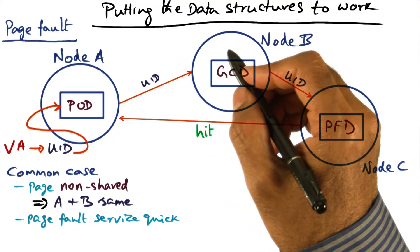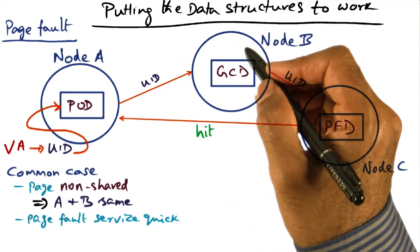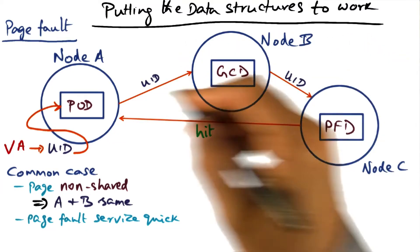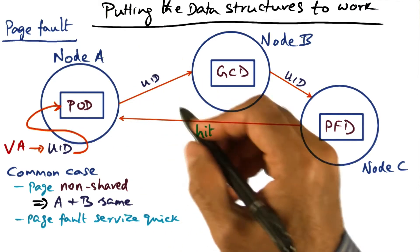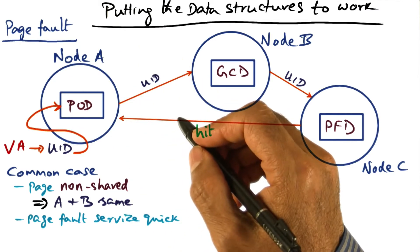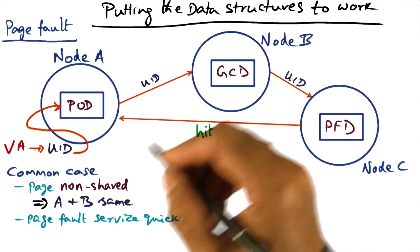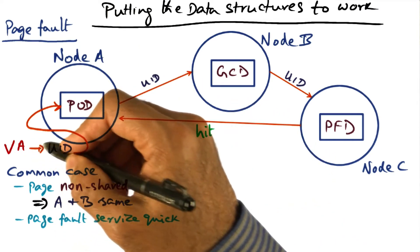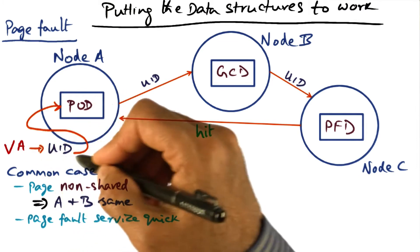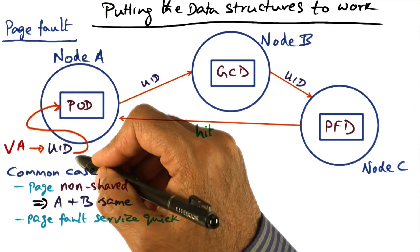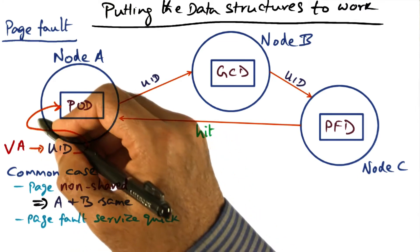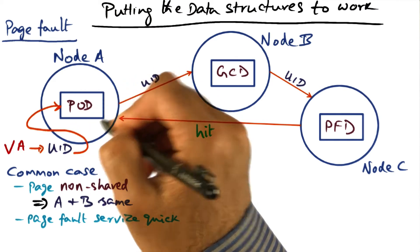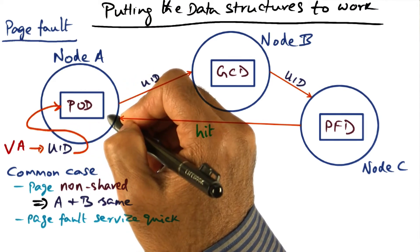Now that we understand the data structures, let's put them to work. Let's first look at what happens on a page fault. On a page fault, the node first converts the virtual address to a UID. And once it converts it to the UID, it goes to the page ownership directory.